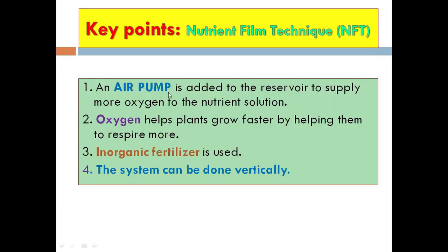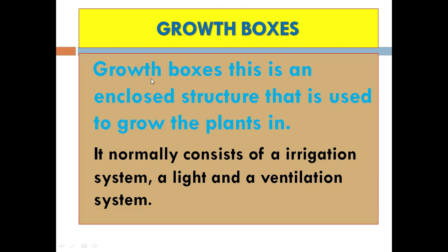Key points with the Nutrient Film Technique: number one, an air pump is added to the reservoir to supply more oxygen to the nutrient solution; number two, oxygen helps plants grow faster by increasing respiration and energy production; number three, inorganic fertilizers and other water-soluble nutrients are used; number four, the system can be done vertically, so vertical farming can be practiced with this system.